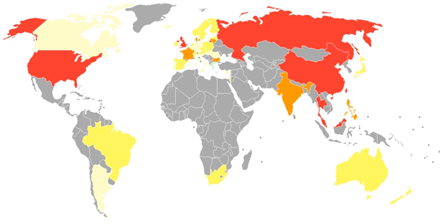Although the word privacy is actually never used in the text of the United States Constitution, there are constitutional limits to the government's intrusion into individuals' right to privacy. This is true even when pursuing a public purpose such as exercising police powers or passing legislation. The Constitution, however, only protects against state actors. Invasions of privacy by individuals can only be remedied under previous court decisions.